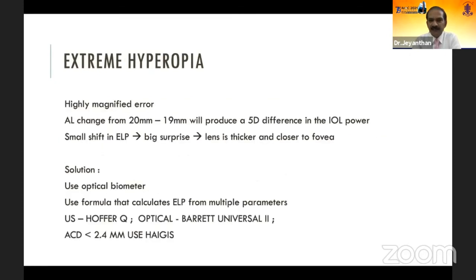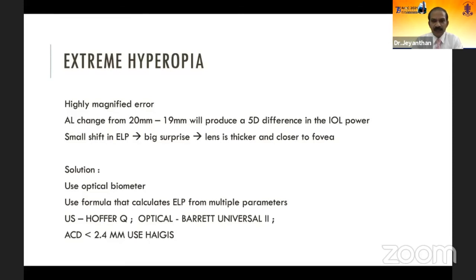For axial myopia with or without staphyloma, IOL power calculation is very critical. Axial length correction for high to extreme axial myopia incorporates three approaches: use and adjust optical biometry axial length as recommended by Wang and Kok; the gold standard is Barrett Universal II formula; and in the future, Hill RBF method for IOL powers more than 6 diopters. For extreme hyperopia, even a 1 mm axial length change produces 5 diopters of IOL power difference in eyes under 20 mm. Use optical biometry and a formula that calculates ELP from multiple parameters, not just ACD. For ultrasound users, use Hoffer Q formula.